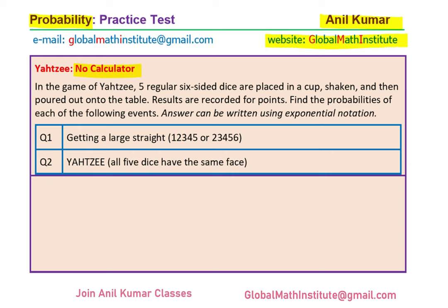Part A is getting a large straight. A straight means numbers like 1, 2, 3, 4, 5 or you could get 2, 3, 4, 5, 6. Since there are five dice, you could get five consecutive numbers. Part B is to get Yahtzee, which means all five dice show the same face.